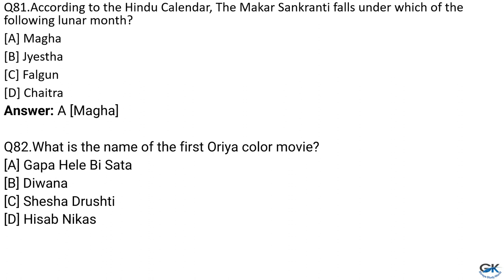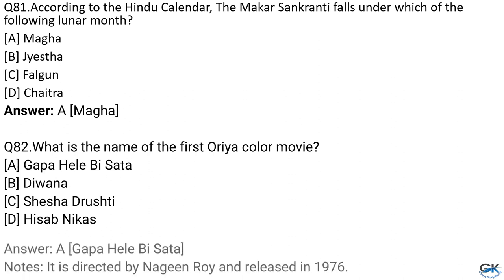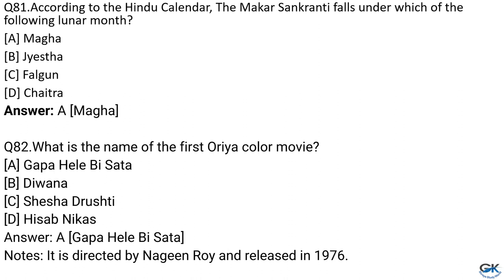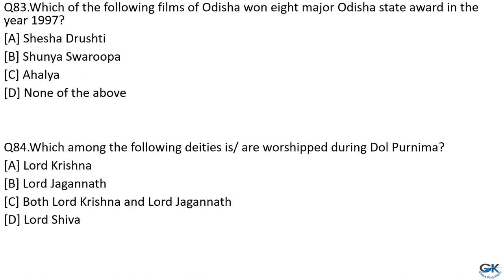Question No. 82: What is the name of the first Odia color movie? Option A: Gapa Hele Bi Sata. Option B: Diwana. Option C: Sesa Drushti. Option D: Hisab Nikas. The answer is Option A, Gapa Hele Bi Sata. It was directed by Nagin Roy and released in 1976. Question No. 83: Which film of Odisha won eight major Odisha state awards in 1997? Option A: Sesa Drushti. Option B: Dunya Swarupa. Option C: Ahalya. Option D: None of the above. The answer is Option C, Ahalya.